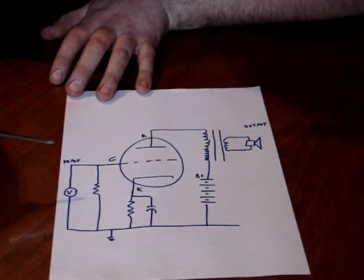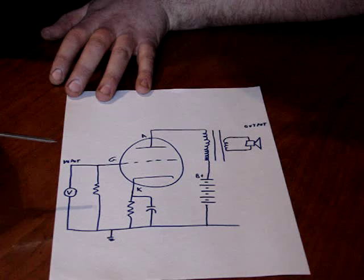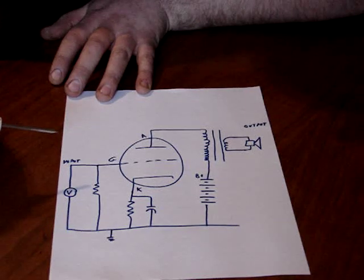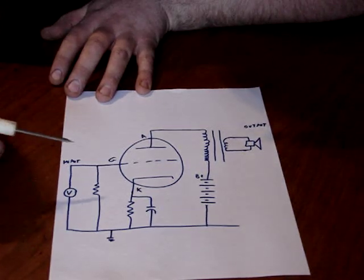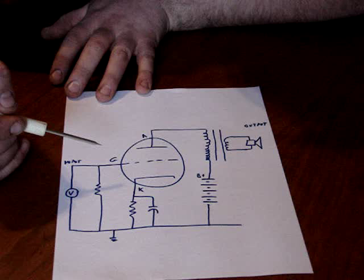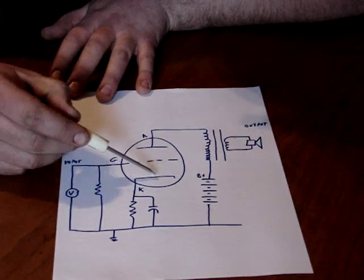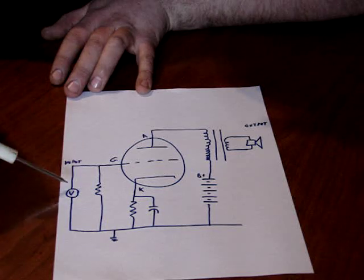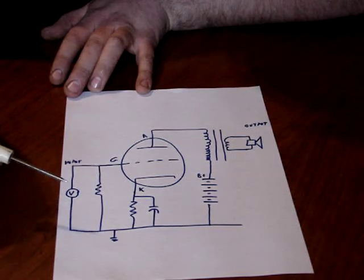A lot of transmitting tubes, radio transmitters, shortwave, anything like that that's tube—most of those are biased near cutoff. The reason being is it saves power and it saves tube life, because there's no current flowing when you're not doing anything.